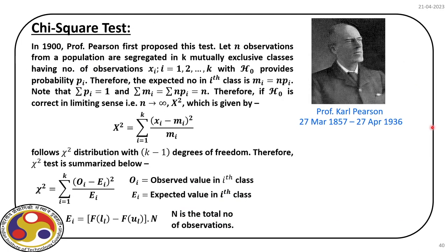The chi-square test was proposed by Professor Karl Pearson in 1900. We have n observations from a population segregated into k mutually exclusive classes (bins), and we propose a null hypothesis — a distribution for this data. For the i-th class, we associate a probability pᵢ. From probability theory, the expected number of observations in the i-th class is mᵢ = pᵢ × n. The sum of all pᵢ equals 1, and the sum of all mᵢ equals the total observations n.